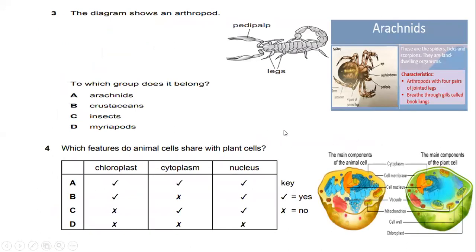Number three. The diagram shows an arthropod pedipalp. So as you know that arachnid pedipalp is part of the arthropod arachnid. So this is where they have the characteristic with four pairs of jointed legs which breathes through gills called book lung. So the answer for this is arachnid.